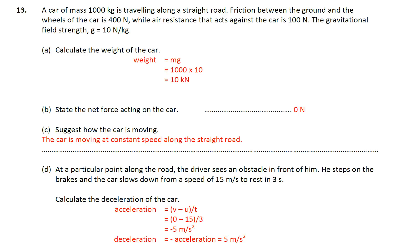Okay, now we are going to look at question number 13. A car of mass 1000 kg is traveling along a straight line, straight road.